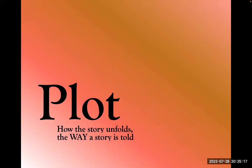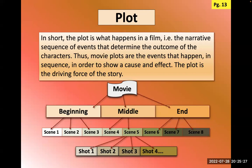Plot is how the story unfolds — the way a story is told. In a film we can jump around in time; we might tell the ending first to get people excited, then jump back to the beginning. A film has a beginning, middle, and end, each made up of many scenes, which are broken down further into shots. The plot shows cause and effect — it's the driving force in the story.